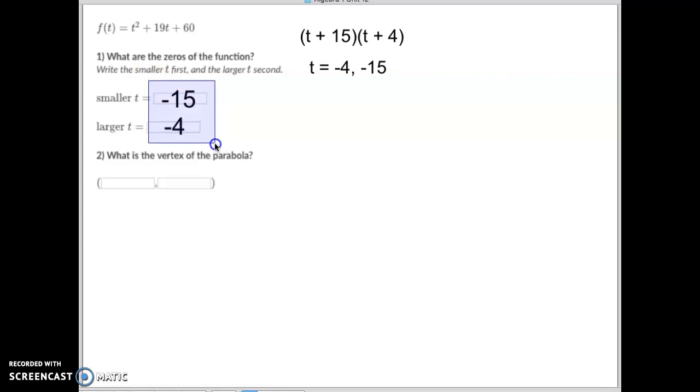Add them together divide by 2. Negative 15 plus negative 4 is negative 19. Half of negative 19 is negative 9.5. So I'm simply going to take negative 9.5 I'm going to plug it in for t here. I'm going to plug it in for t here because that's the x coordinate of my vertex. And then I'm going to add these together, add these together, and multiply.